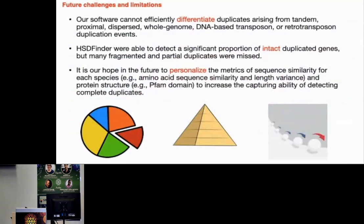Finally, I should mention that our software cannot efficiently distinguish duplicates from tandem duplicates, whole genome events, or TE-based events, because we identify them based on HSD similarity alone. Also, HSDFinder is able to detect a significant portion of intact duplicate genes, but some fragmented and partial duplicates — those with less than 50% identity — will be missed. In the future, it is our hope to personalize the matrix of sequence similarity for each species. Thank you!